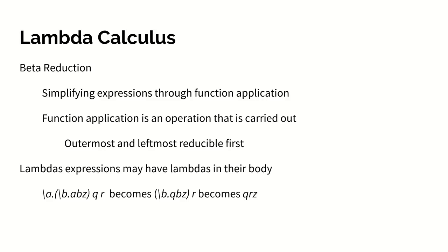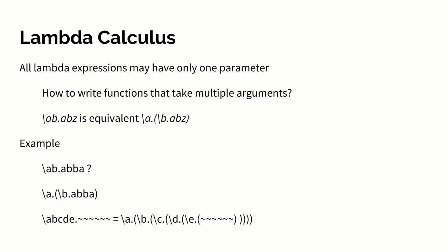So the process of taking a complex expression that involves multiple Lambdas and standalone variables and applying Lambdas until you can't anymore is called beta reduction. Function application in general is carried out by the leftmost and outermost function in the expression. Also, Lambdas may contain other Lambdas in their bodies from their definition. Notice that the A still binds the A that is inside of the nested Lambda expression.